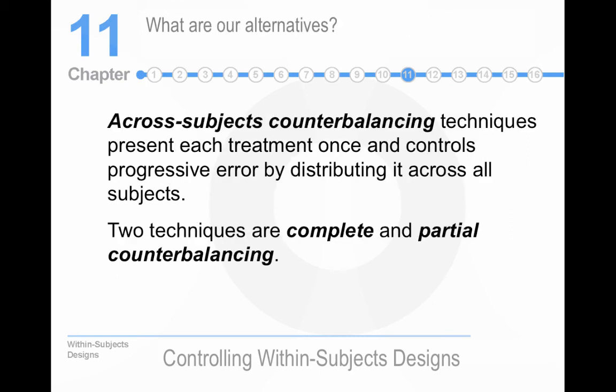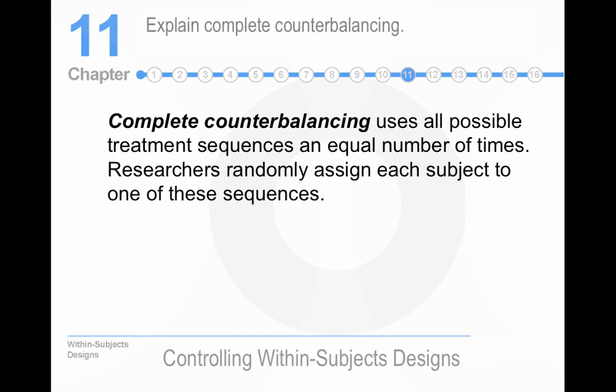So, let's switch to the real world, where people use across-subjects counterbalancing. And the two techniques are complete and partial counterbalancing. It really depends on how many treatment conditions you have. Complete counterbalancing uses all possible treatment sequences an equal number of times. So, let's say you have two treatment conditions, A and B. What you do is half of the people get A and then B, and the other half of the people in your study get B and then A. Voila! It's done. That's an easy way to run your study. And that's the way most people do.